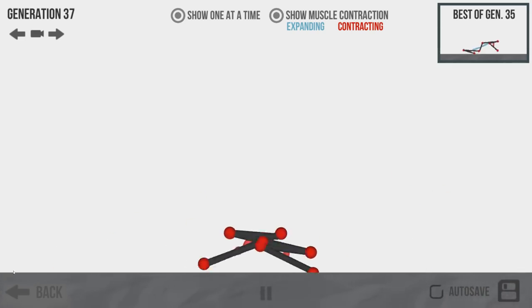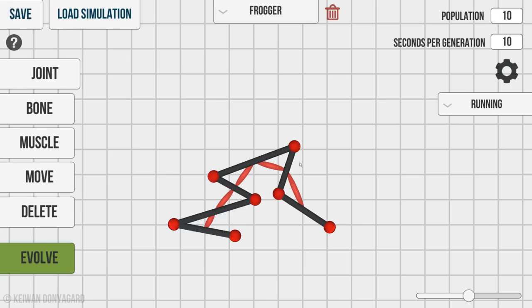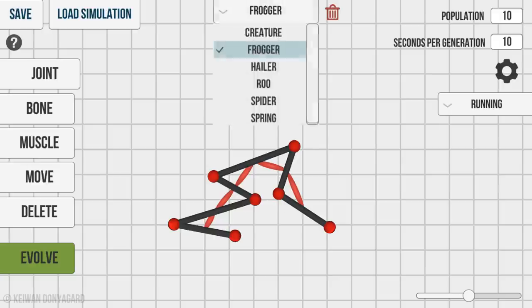We're at generation 20 and this is kind of the best of the best. They're all working. So the species as a whole, well except for that guy. Don't worry about that guy. He's the runt of the litter. I would say that this frog clearly at generation 37 is successful. One muscle from one bone to one bone. There are a total of five muscles and six bones. This my friends is the frogger.